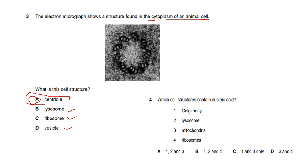Question four: which cell structures contain nucleic acid? Your nucleic acids are DNA and RNA. You can't find DNA or RNA in the Golgi body — it processes proteins being folded and modified. The lysosome is a digestive organelle and doesn't contain DNA or RNA. However, mitochondria do contain DNA and RNA, because of the endosymbiont theory — mitochondria used to exist as independent cells and retain their own DNA.